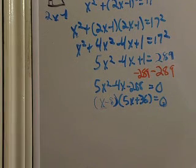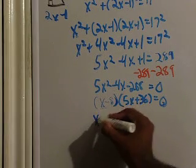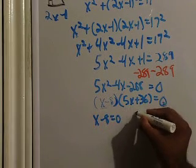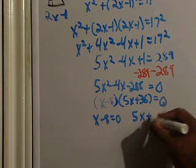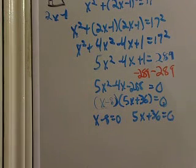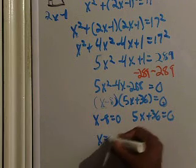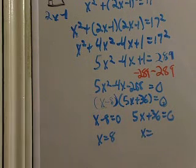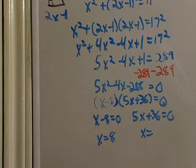Alright. So what's next? So I need to set those individual binomials equal to 0. So that's going to be X minus 8 equals 0, and 5X plus 36 equals 0. So when I solve for the left-hand equation, I get X equals 8, and for the right-hand equation, I get X equals negative 36 over 5.